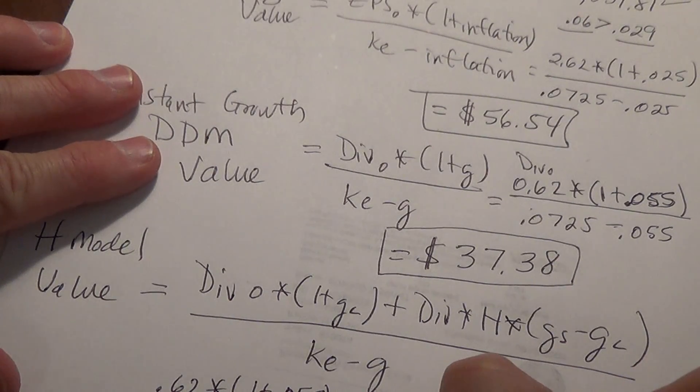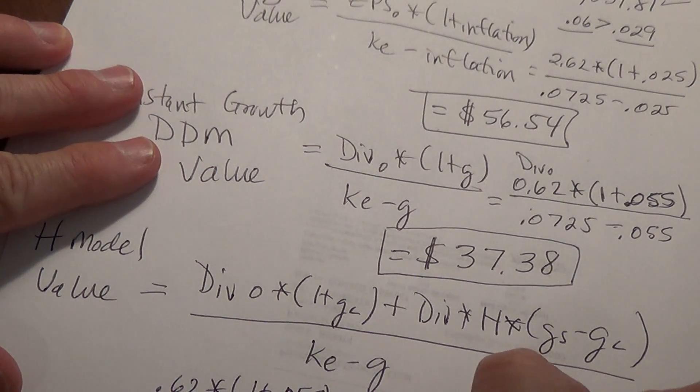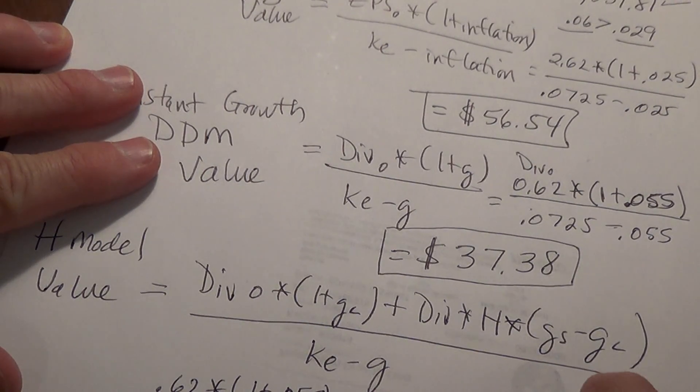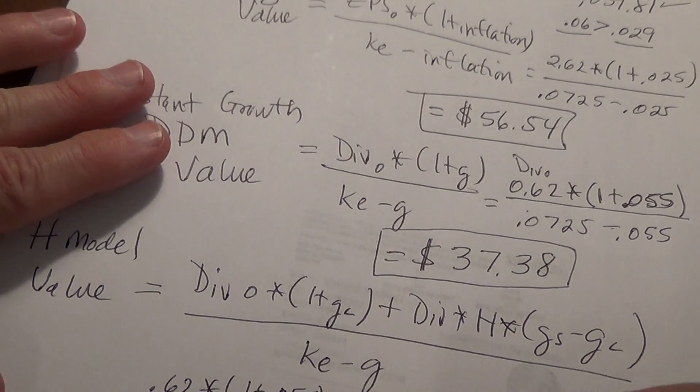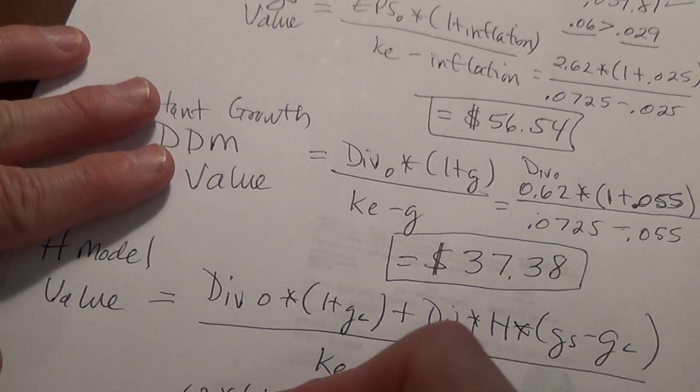So we multiply by 6, and then multiply by the difference between 18% and 5 and a half percent, the short term growth and the long term growth. So 0.18 minus 0.055.